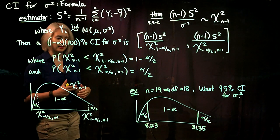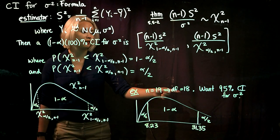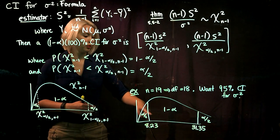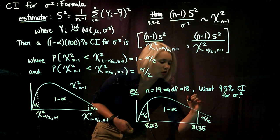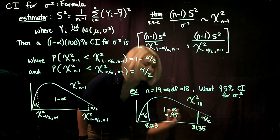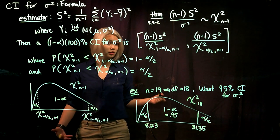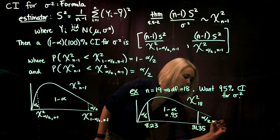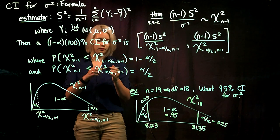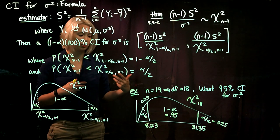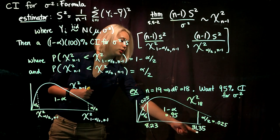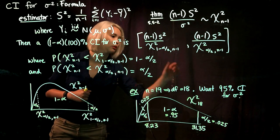Let's do a quick example. If we have a sample size of 19, we have 18 degrees of freedom. Suppose we want a 95% confidence interval for sigma squared. We draw a chi-squared distribution with 18 degrees of freedom, put 0.95 in the middle, leaving 0.05 to split evenly — so 0.025 in each tail. Using qchisq in R or a table, the lower quantile is 8.23 and the upper quantile is 31.35. These are the two numbers we plug into the denominators of our interval.